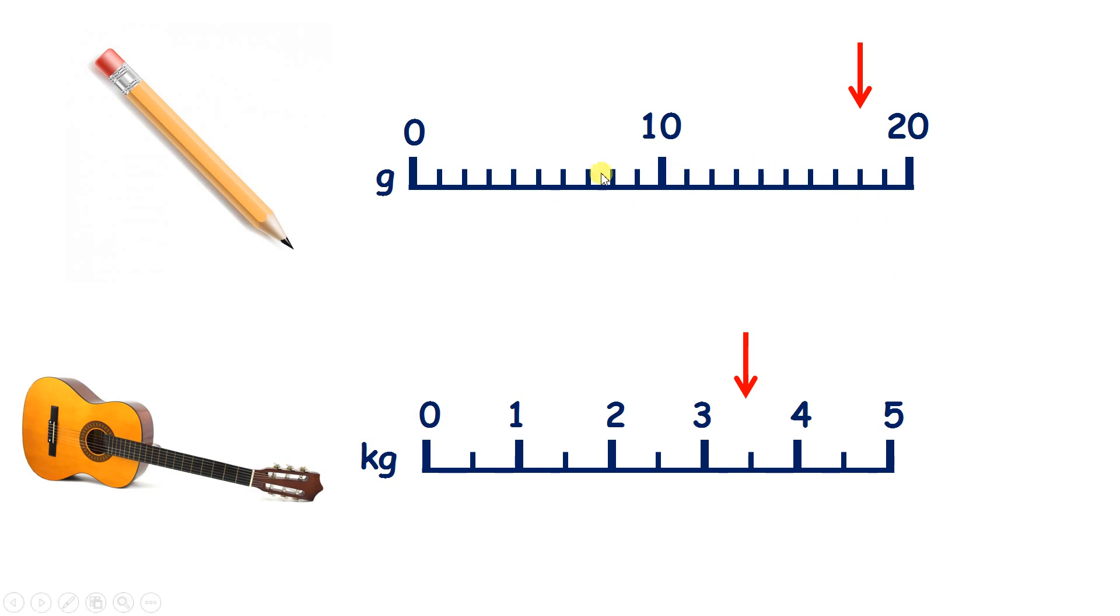Now this scale here is interesting. Although only 0, 10 and 20 are labelled, we have lots of little markings, and each marking represents 1 gram, because if we count up in grams, 1, 2, 3, 4, 5.